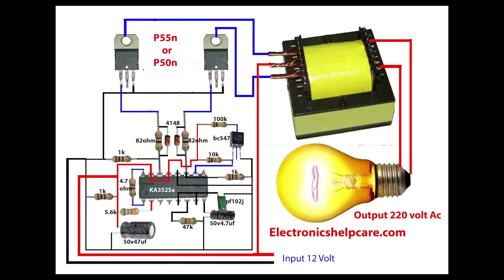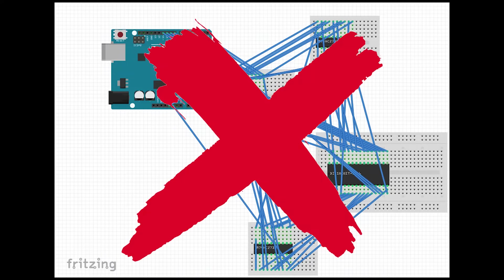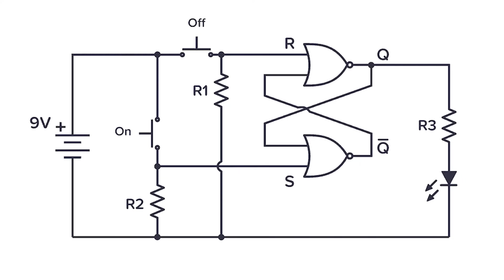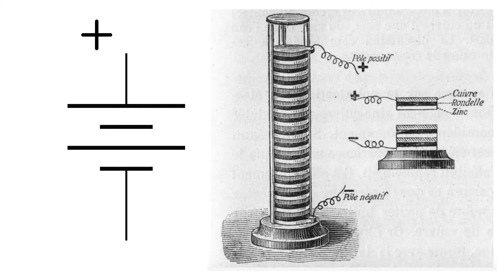While it might seem easy to just use pictures to represent electronic components, this approach quickly dissolves into a sketchy and ambiguous mess. Instead, we use schematic symbols to graphically represent components. Take the schematic symbol for a battery as a good example. The original battery is basically a stack of little metal disks separated by pieces of paper moistened with an electrolyte, and the schematic symbol is a fairly clear representation of that. Most schematic symbols are derived exactly this way — they're simplified abstractions of the actual parts they represent, which makes them pretty easy to remember once you get the hang of it.